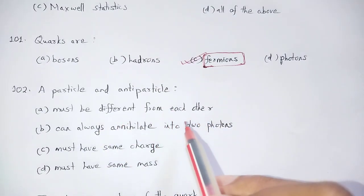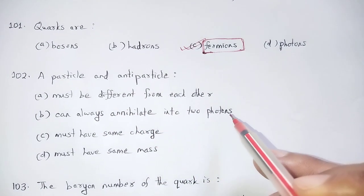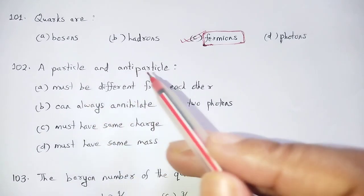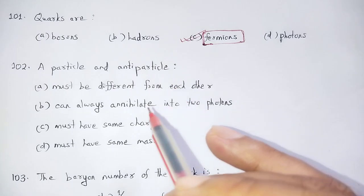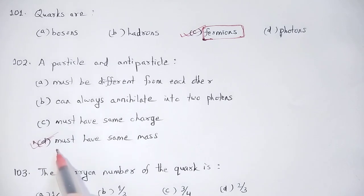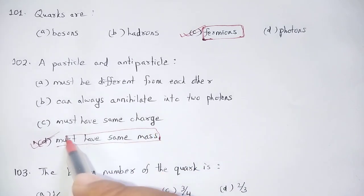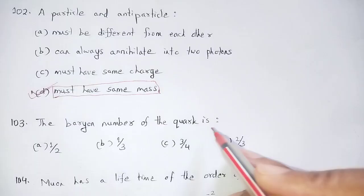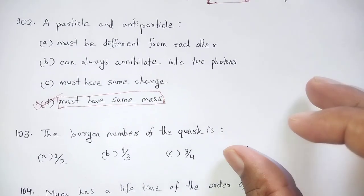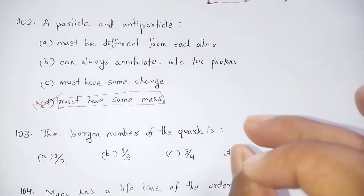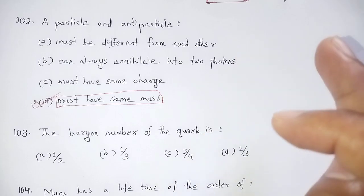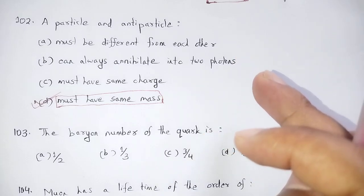Particle-antiparticle pairs: most differ from each other but can always annihilate into two photons. Most have the same charge magnitude and same mass. The variable quantum number of the quark includes strangeness and isospin.